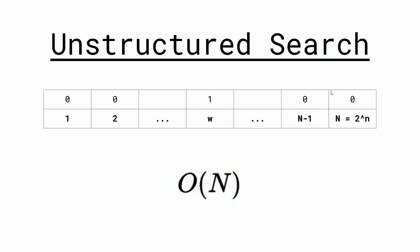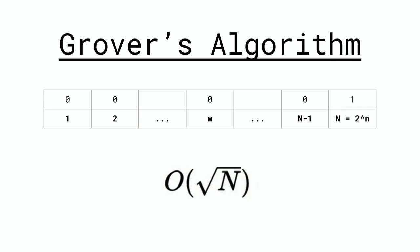What Grover's algorithm can do is solve this question in O(square root of n) time, which is a very big speed up from classical computers. If we were to imagine n would be a million, then the classical computer could solve it in a million steps, while Grover's algorithm could solve it in a thousand steps.